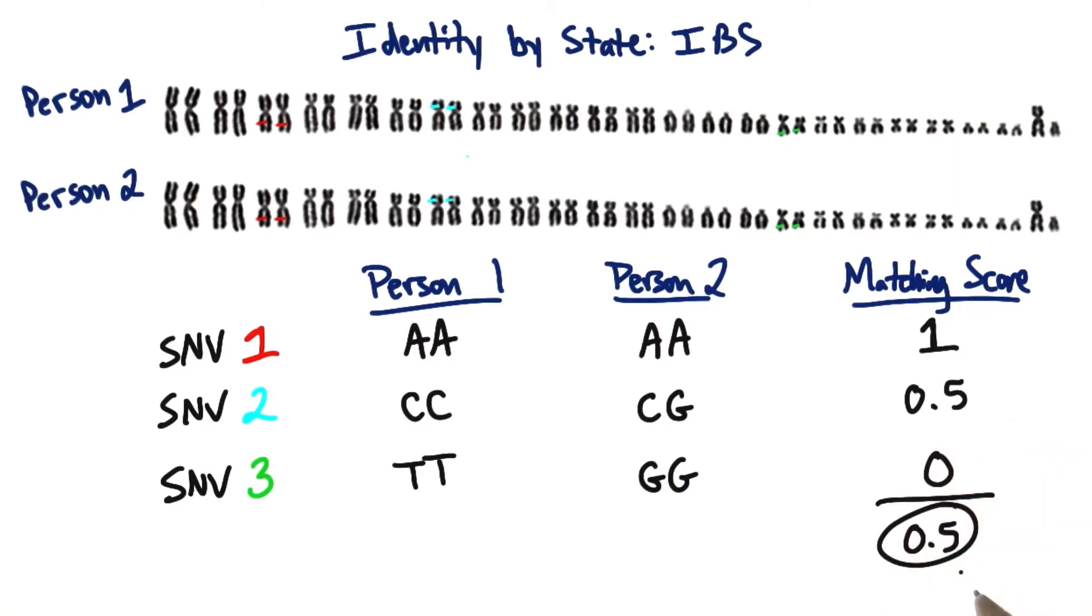Our overall matching score for all three SNVs together is half. This means that between person 1 and person 2 for these three SNVs, half of the alleles they have match.